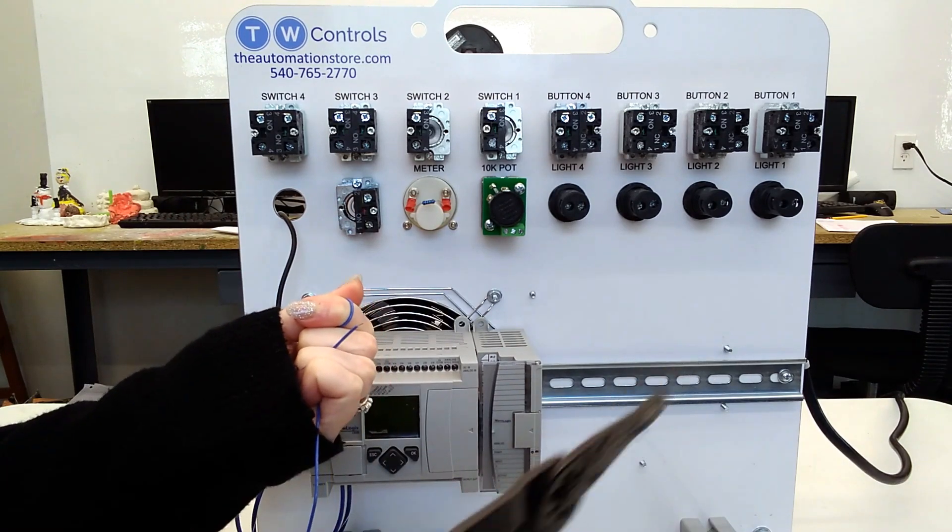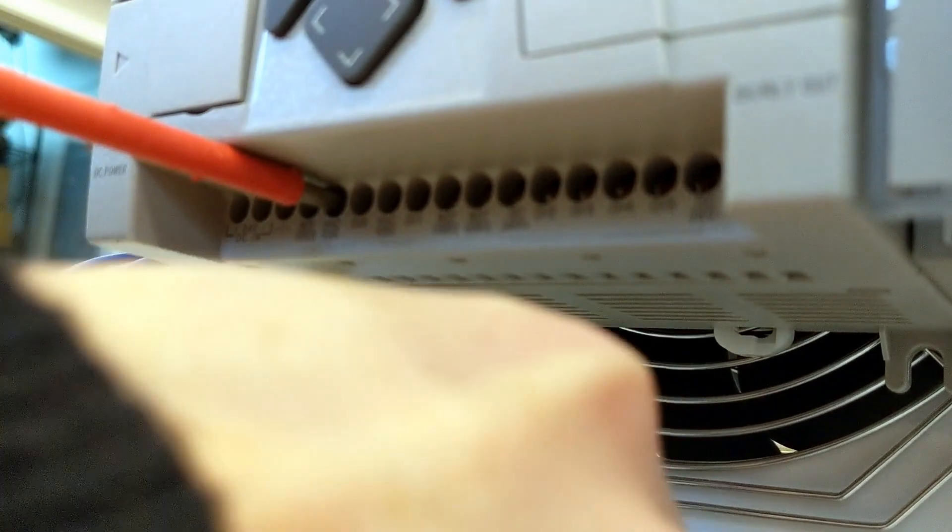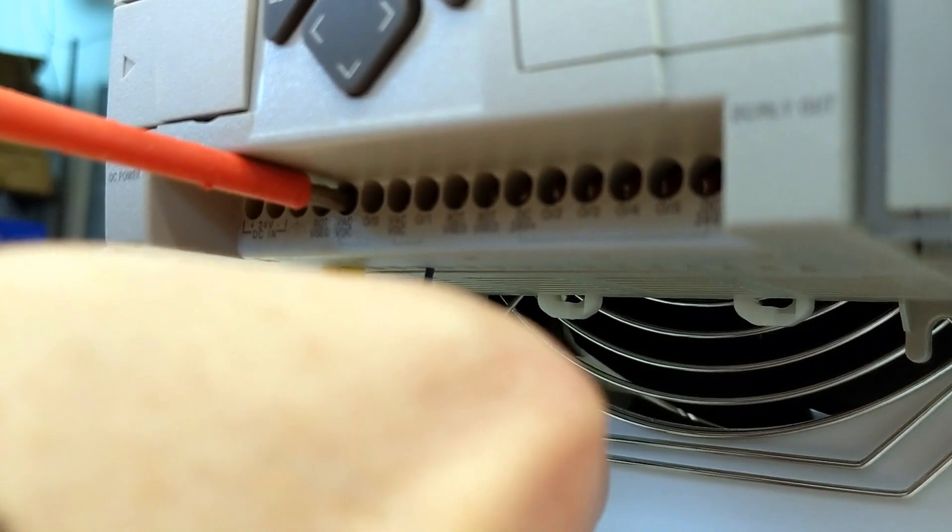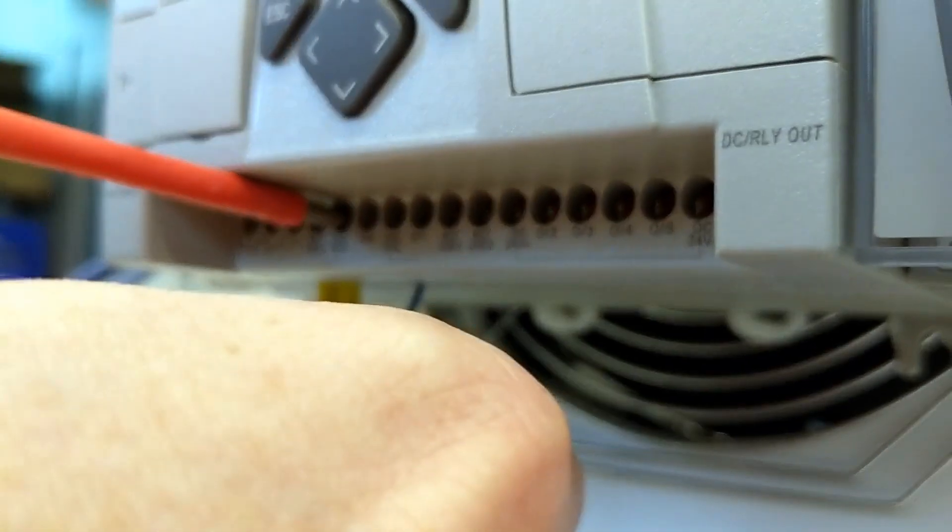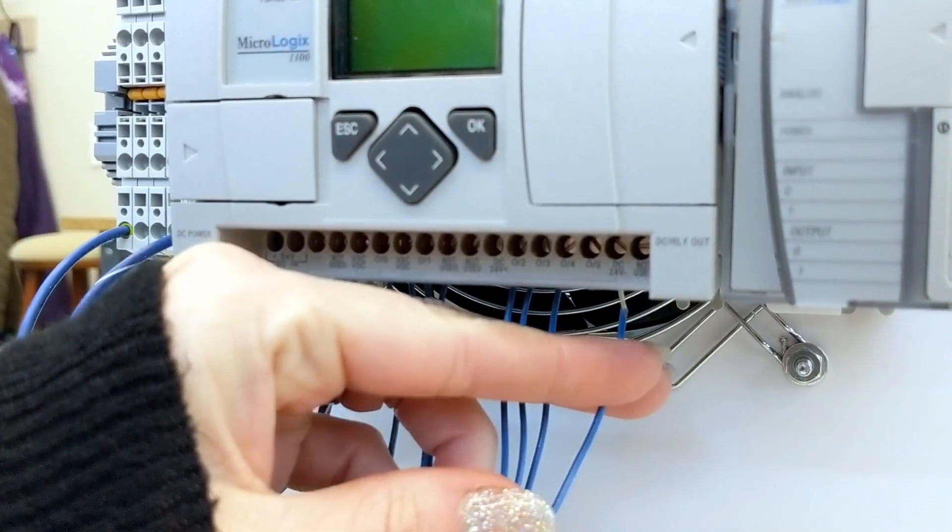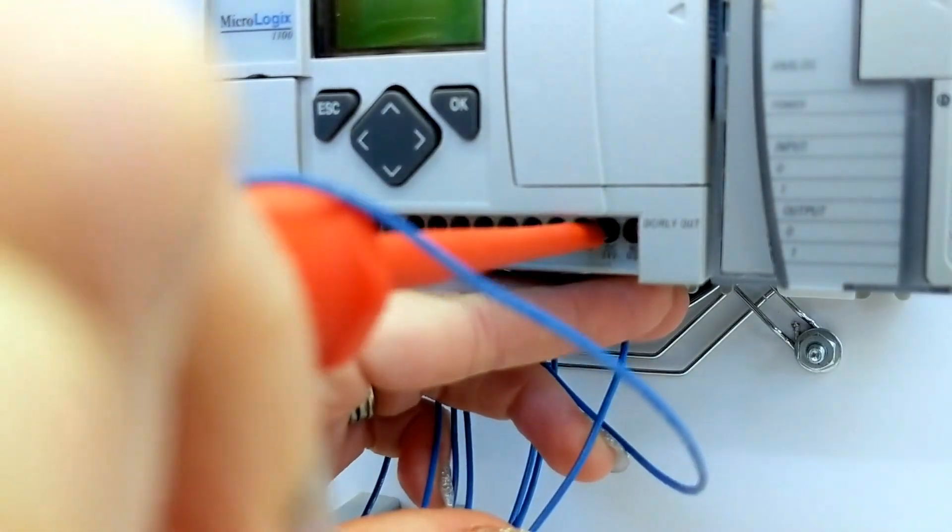There isn't a particular order you need to go in, but I'm going to start by connecting the wires to the bottom of the PLC. You'll need wires on the two VACVDC terminals, the O-0, O-1, O-2, O-3, DC24V+, and DC24V- terminals.